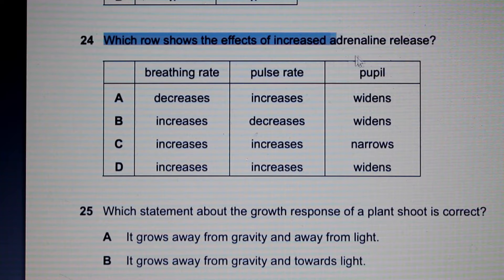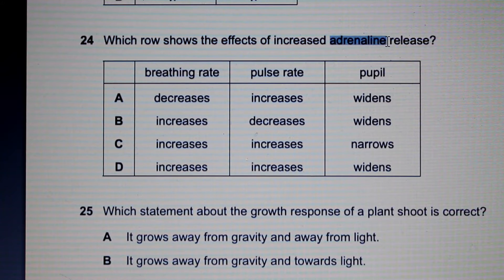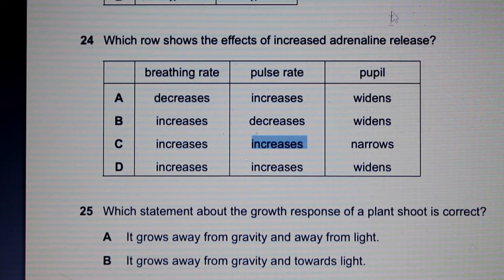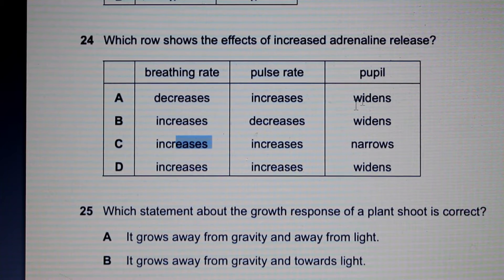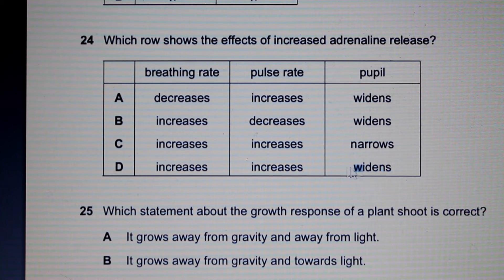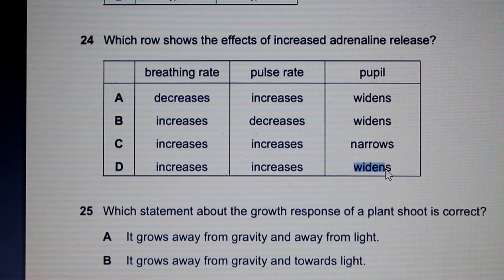Question 24: Which row shows the effects of increasing adrenaline release? Adrenaline is our fight-or-flight hormone, so it increases heart rate and pulse rate. It also increases respiratory rate — our breathing rate. As for the pupil, adrenaline widens the pupil because it acts on the sympathetic nervous system. The answer is D.